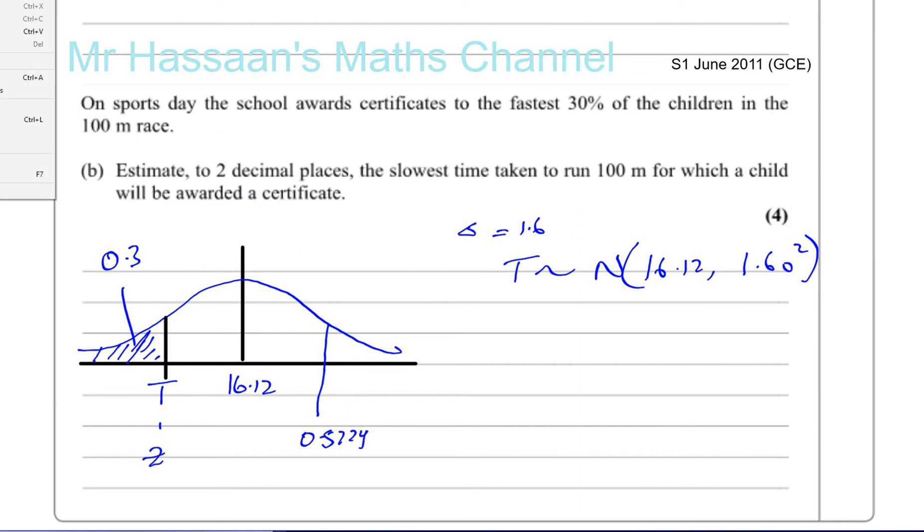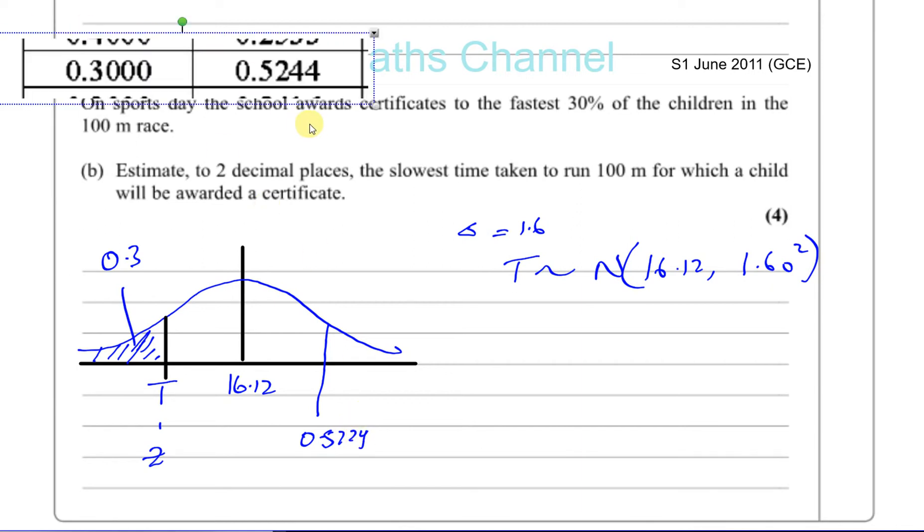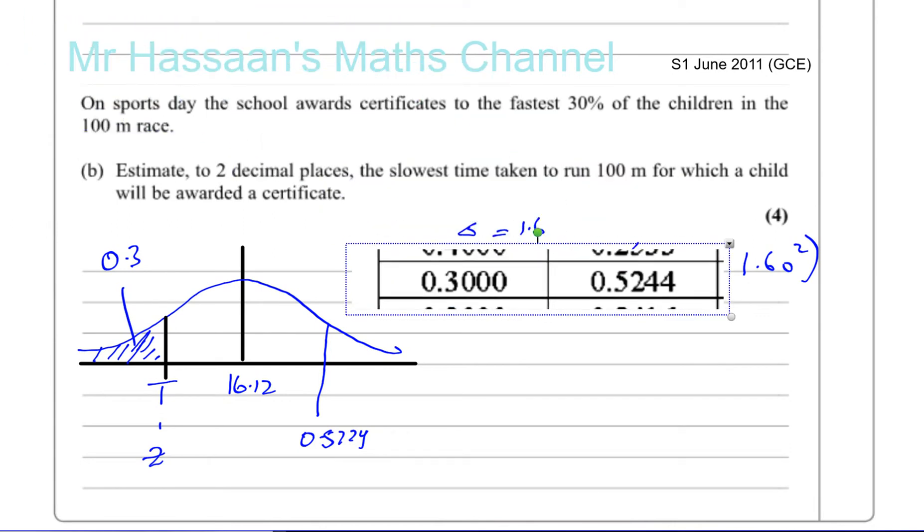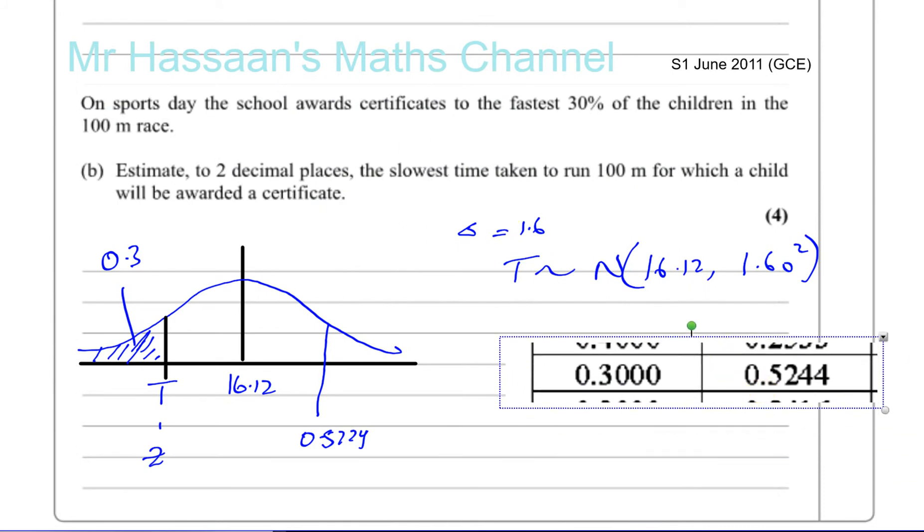This is from that table where we have this side is the probability and this is the z value, but this is the area, the probability to the right of this value. So this is the 0.3 and this is 0.5224. As it's symmetrical, the z value we're looking for is below the mean, so it's minus 0.5224.